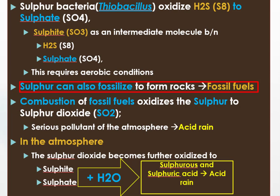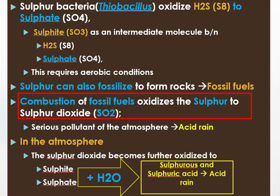That means dead remains of organisms get buried and remain in the ground or sedimentary rocks for many years and form fossil fuels. Combustion of these sulfur-containing fossil fuels oxidizes sulfur to sulfur dioxide. We know that this sulfur dioxide is a serious pollutant to the atmosphere.